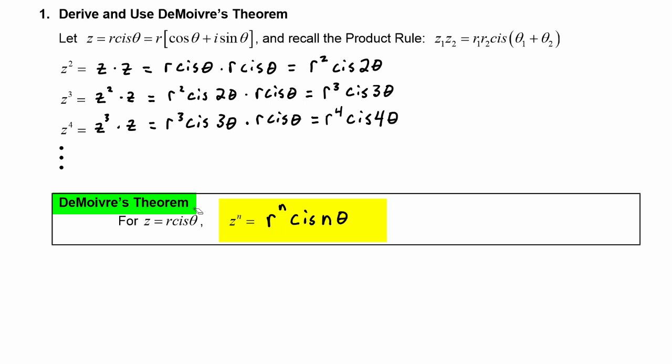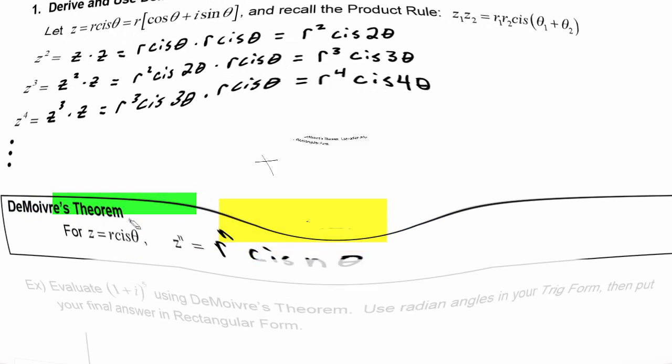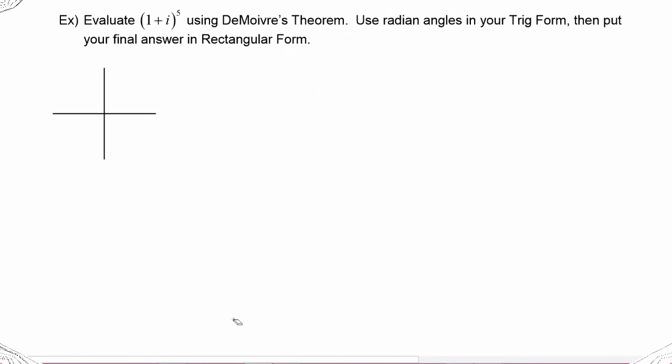Let's try an example to see how that works. In this example, we have to evaluate the quantity (1 + i) to the fifth power using De Moivre's Theorem. We are told to use radian angles in the trig form, then put the final answer into rectangular form.